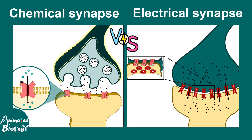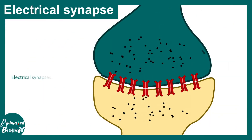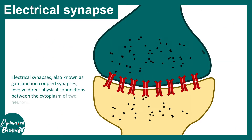In this video we'll be talking about the differences between chemical and electrical synapses. Electrical synapses, also known as gap junction coupled synapses, involve direct physical contact or connection between the cytoplasms of the presynapse and the postsynapse.